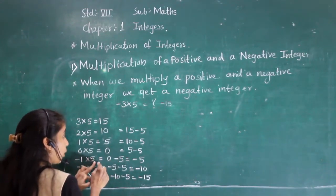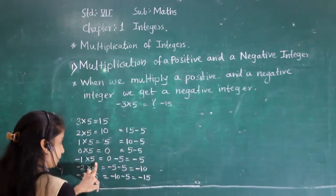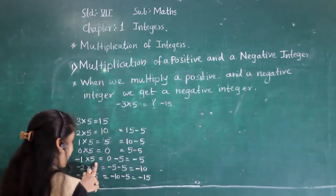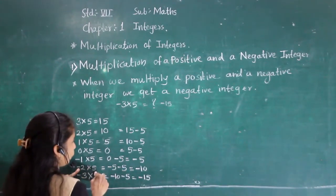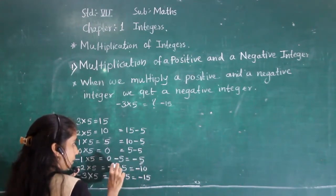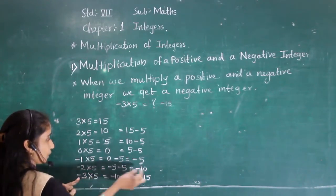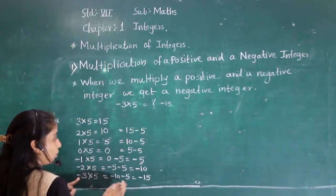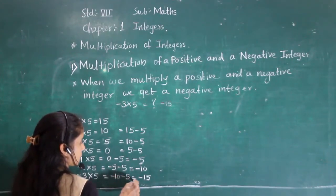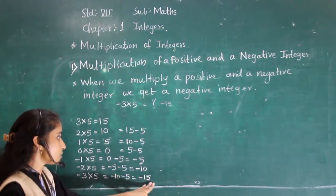Continuing: minus 2 into 5. We got minus 5 before, so minus 5 minus 5 equals minus 10. Then minus 3 into 5: minus 10 minus 5 equals minus 15. So minus 3 into 5 equals minus 15. Using this pattern we got the same answer.